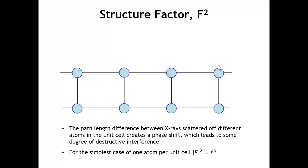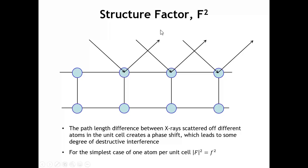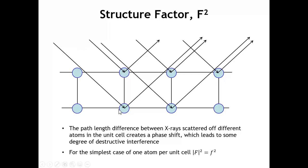Up to this point, we have been talking about scattering where atoms are on lattice points. If we had a line of scatterers and an X-ray beam came in and was diffracted, with an incoming angle theta and outgoing angle theta that were equal, we get constructive interference. Further, if we had scattering off another plane of atoms, certain distances between the planes lead to constructive interference — that's described by Bragg's law.